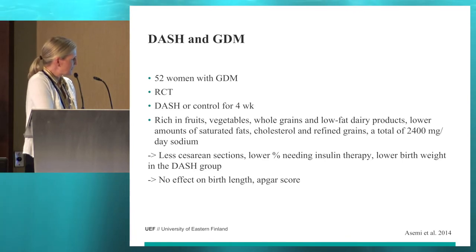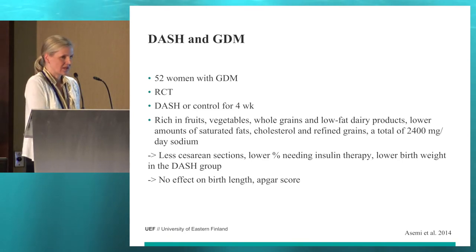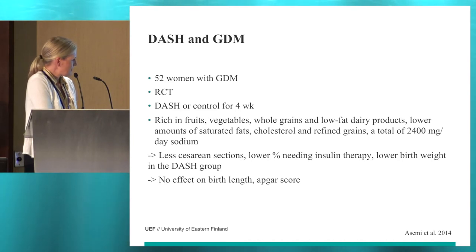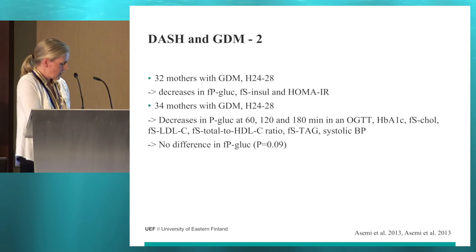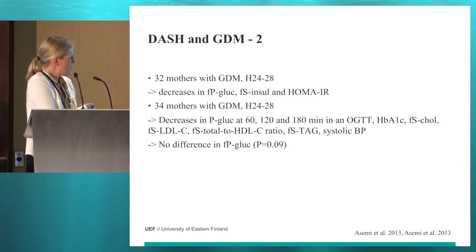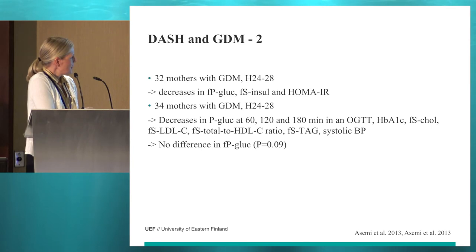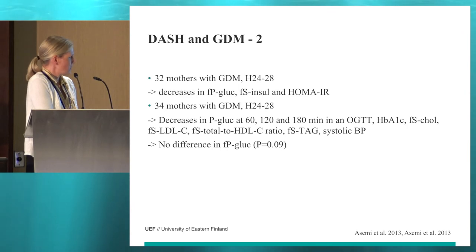The total intake of sodium corresponded to about 6 grams of salt per day. In the intervention group, there were fewer cesarean sections, a lower percentage of mothers needed insulin therapy, and there was lower birth weight. There was no effect on birth length or APGAR score. In two other similar studies, the first found decreases in fasting plasma glucose, insulin, and HOMA-IR. The other study didn't find a significant difference in fasting plasma glucose — it was on borderline significance.